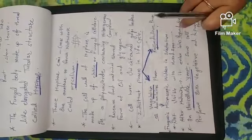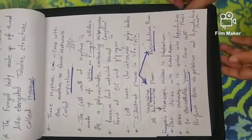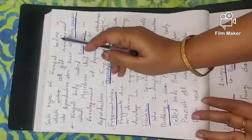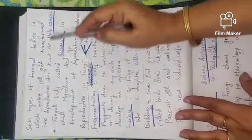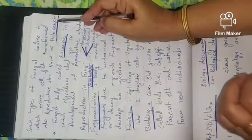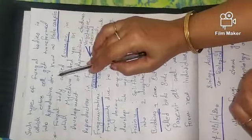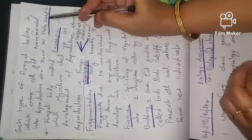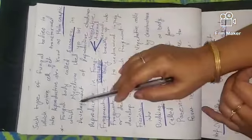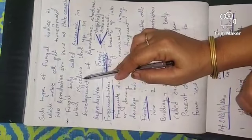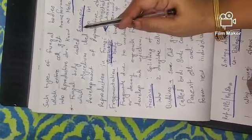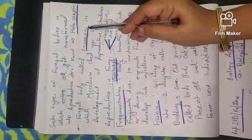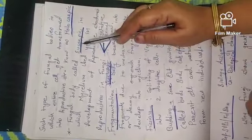Unicellular yeast performs both phases. When the fungal body entirely gets transformed into the reproductive structure, it is known as holocarpic. When the mycelium, the thread-like structure network, moves into the reproductive structure, then it is called eucarpic. You have to differentiate between holocarpic and eucarpic.